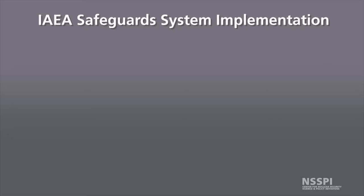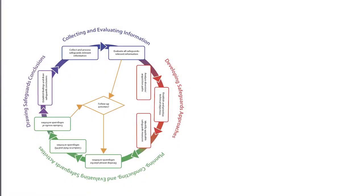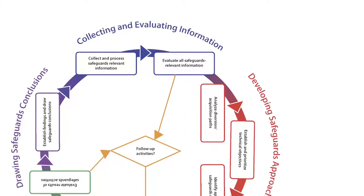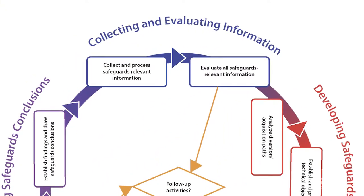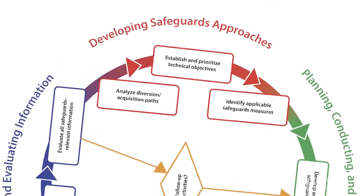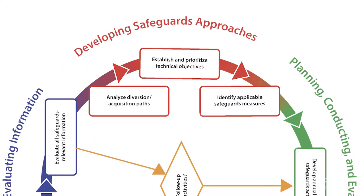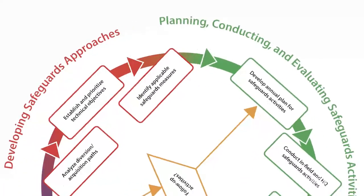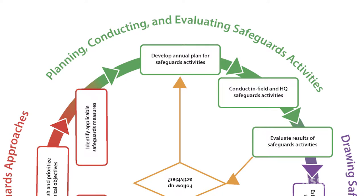Now let's take a look at IAEA safeguards system implementation and the four general phases of safeguards system implementation. The first begins with collecting and evaluating information: what facilities does the state have, what activities are they conducting? And then, from that information, developing a safeguards approach — how are safeguards applied at the facility or facilities within a state? And then, once a safeguards approach has been developed and applied, the IAEA can move on to planning, conducting, and evaluating safeguards activities.